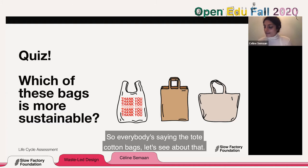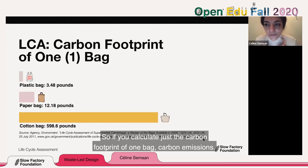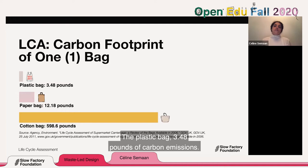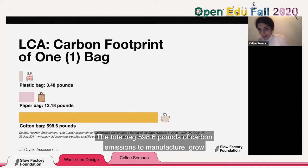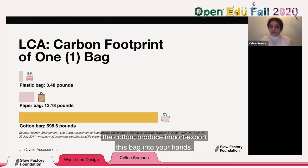If we calculate just the carbon footprint of one bag: the plastic bag produces 3.48 pounds of carbon emissions. The paper bag — remember, paper is made from trees — produces 12.18 pounds of carbon emissions. The cotton tote bag produces 598.6 pounds of carbon emissions to manufacture, grow the cotton, produce, import, and export that bag into your hands.